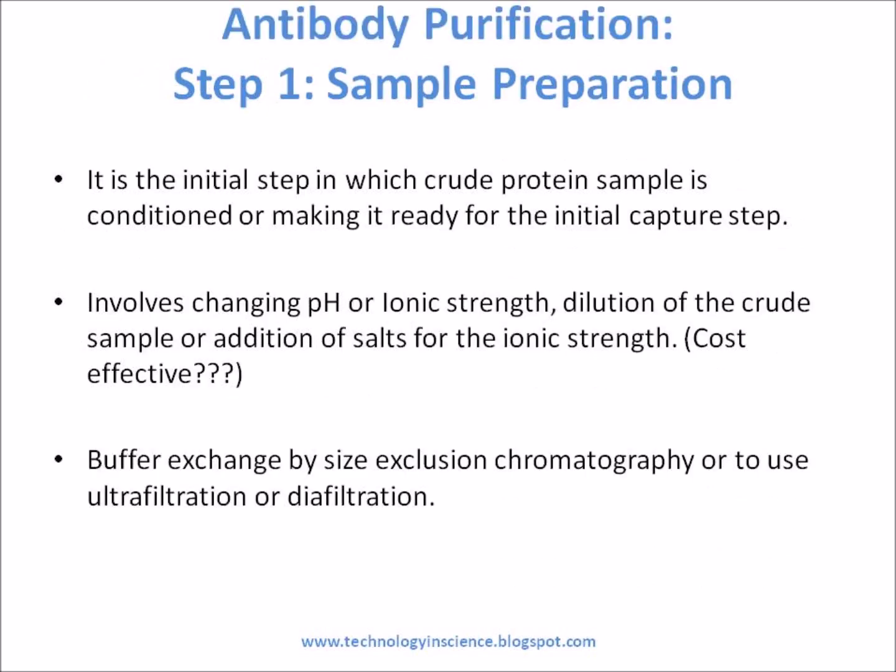Step 1: Sample Preparation. Sample preparation is the initial step in which the crude protein sample is conditioned, making it ready for the initial capture step. Generally this step involves changing pH or ionic strength, dilution of the crude sample, or addition of salts for ionic strength. These techniques may increase the cost in manufacturing, so they may not be feasible in large-scale production. What is suitable in large-scale antibody purification is to use buffer exchange by size exclusion chromatography, or to use ultrafiltration or diafiltration. Dialysis is one common method at lab scale but is not feasible at production scale. The crude antibody sample needs to be concentrated, done either by centrifugation or filtration, and sometimes both methods are combined to get faster results.